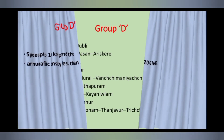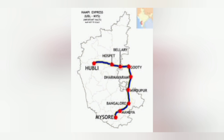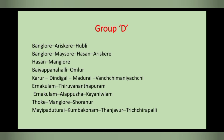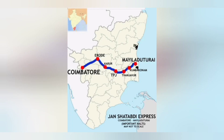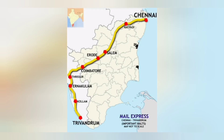We can see some important Group D routes in the southern region. Bangalore, Mangalore, and Mysore routes are under Group D routes. Karur to Mayiladuthurai via Kumbakonam, Thanjavur, and Trichy is also a Group D route. Ernakulam to Trivandrum is also a Group D route. In this map, Ernakulam to Ernakulam junction is a Group B route, and Ernakulam to Trivandrum is a Group D route.